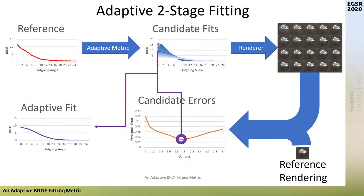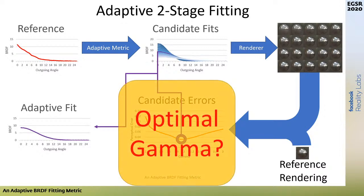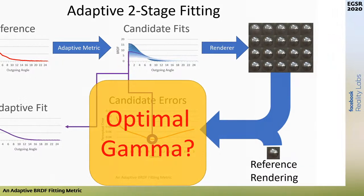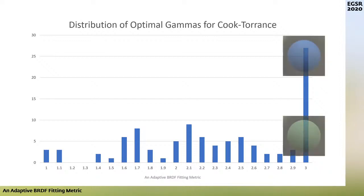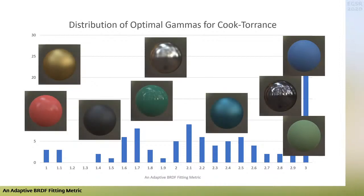With our test scene established, let's look at optimal gamma. Is there one gamma best for all materials? Except for at gamma 3, optimal gammas seem fairly evenly distributed in our 1 to 3 range. Gamma 3 was our cutoff — many materials at 3 would likely have higher optimal gammas if we extended the range, but most are very diffuse and the visual impact of going beyond 3 is negligible. Besides extremely diffuse materials being at or near 3, it is very hard to find patterns in optimal gamma by material type.